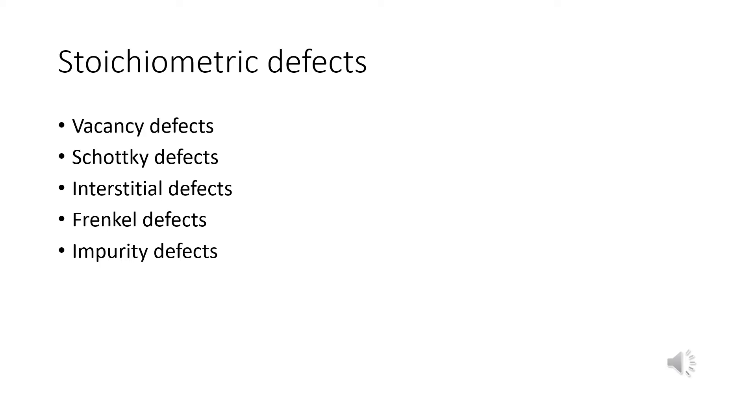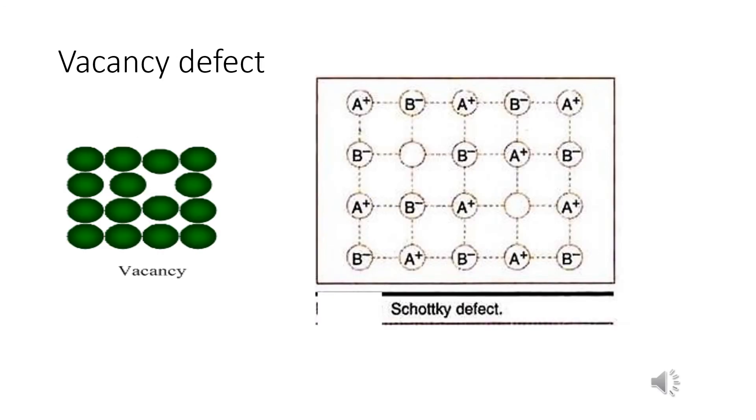First one is vacancy defect. When some of the lattice sites are vacant, the crystal is set to have vacancy defect. That is, whenever we are heating the crystal, the substance or molecules will be evaporated. Their vacancy will be taking place. At that time, its density will be decreases.